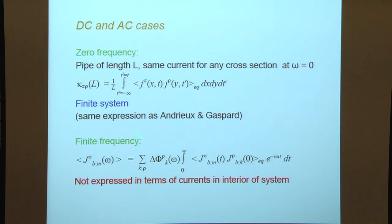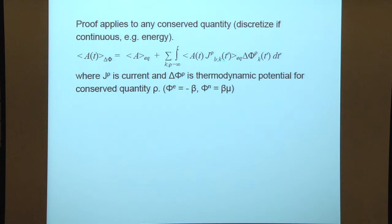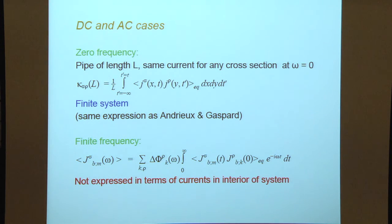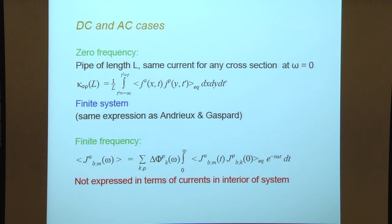So now I'll quickly switch to some numerical results on the AC conductance of these systems. This is for the Fermi-Pasta-Ulam quartic chain. The nonlinearity is quartic. The current measured is between the first two particles in the chain. You put a temperature difference between the two ends of this chain, oscillate it sinusoidally, and measure the heat current flowing in and out of the system at exactly the same frequency.